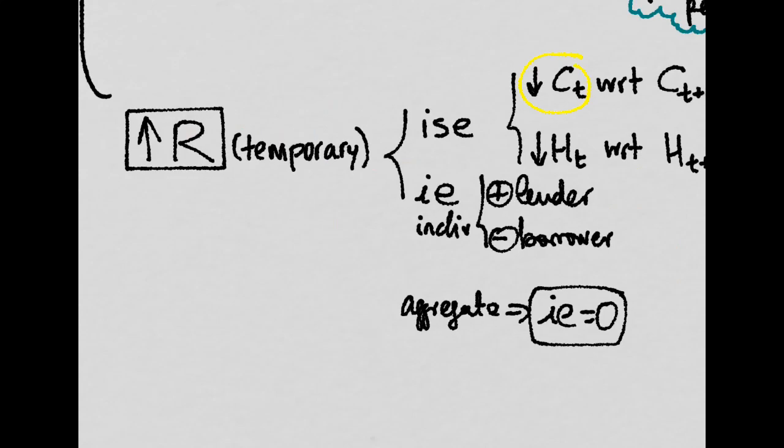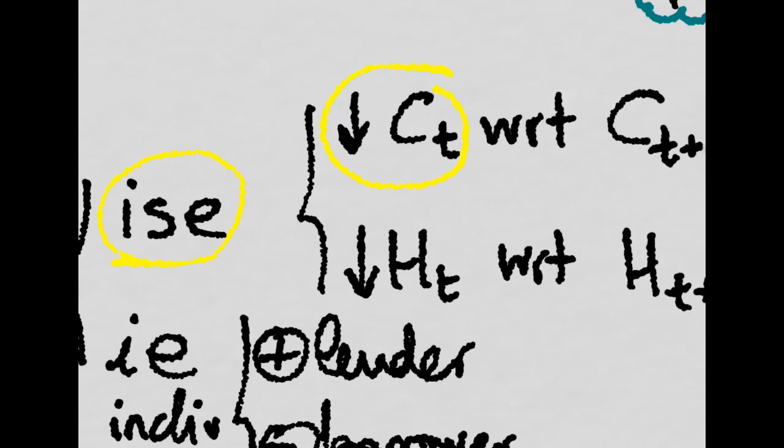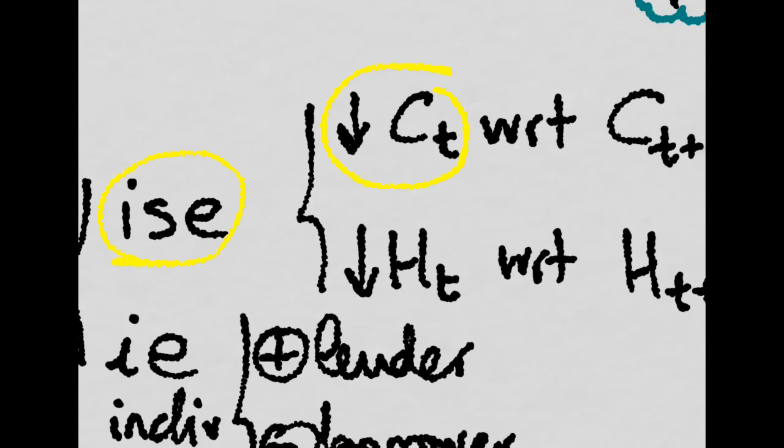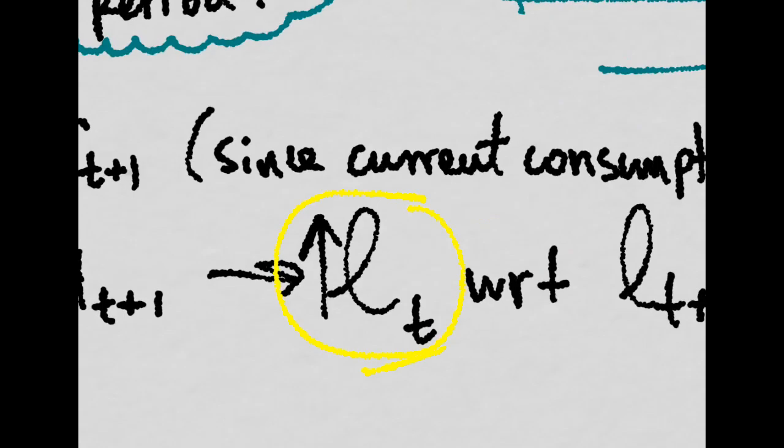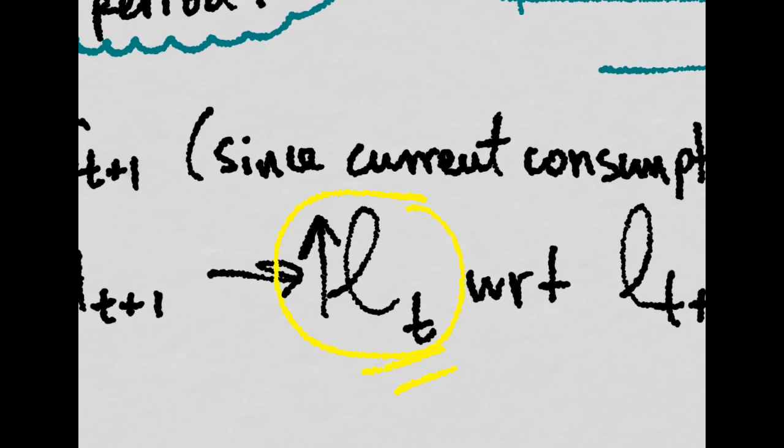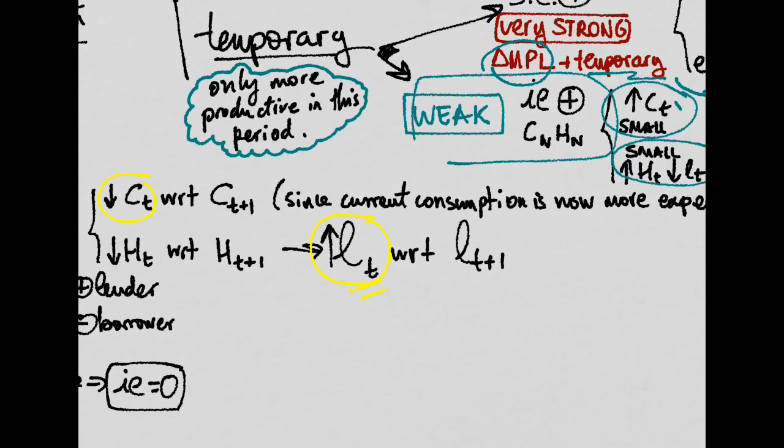And now recall that we have an increase in the interest rate which is usually temporary. There are two things. Well, we have the intertemporal substitution effect. We substitute away from present consumption. And we also decide to work more, to save more, to get more payback next period. So both leisure today and consumption today are more expensive because it pays more to work more, to save more, to get more payback in the future.